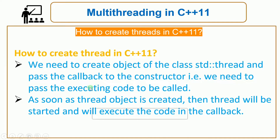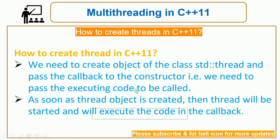The callback is the executing code to be called. As soon as the thread object is created, the thread will be started, and when the thread starts it will simply execute the code in the callback. Once you finish creating the thread object and passing the callback, the thread is created and begins executing your callback.